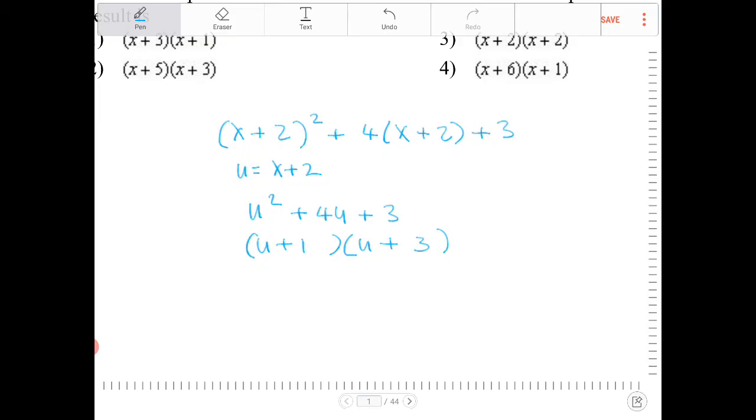Because now I have binomials in terms of u, I'm going to re-substitute what u was to change everything back into x. This turns into (x+2)+1 and (x+2)+3.